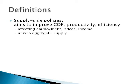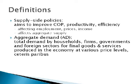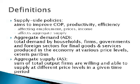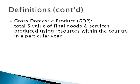Aggregate demand, or AD, is the total demand for final goods and services produced in a specific economy at various price levels, provided all other variables remain constant. The aggregate supply, or AS, is the sum of the total output firms and companies are willing and able to supply at different price levels in any given time period. The gross domestic product, or GDP, is the total money value of final goods and services produced using resources within the country or economy in a given year.